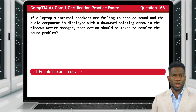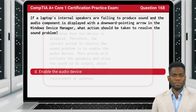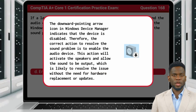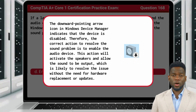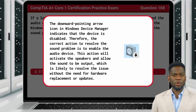The answer is D: Enable the Audio Device. The downward-pointing arrow icon in Windows Device Manager indicates that the device is disabled. Therefore, the correct action to resolve the sound problem is to enable the audio device. This will activate the speakers and allow sound to be output, likely resolving the issue without the need for hardware replacement or updates.